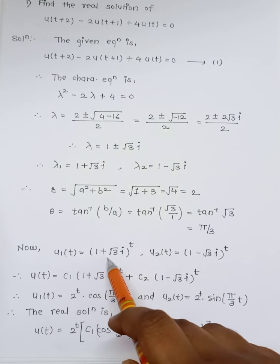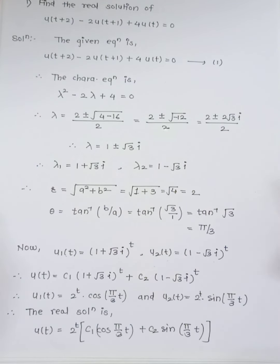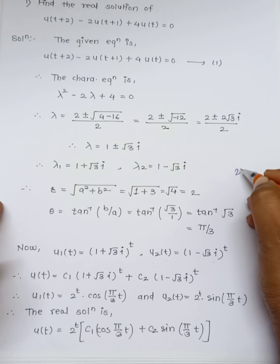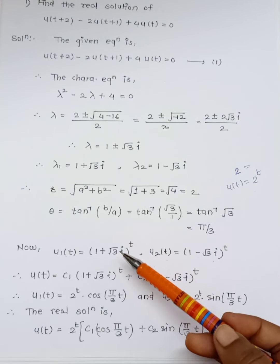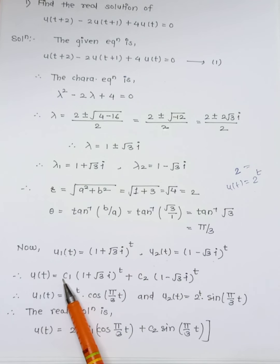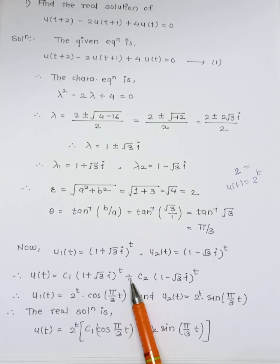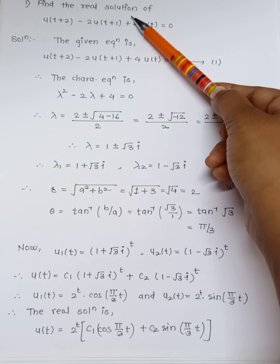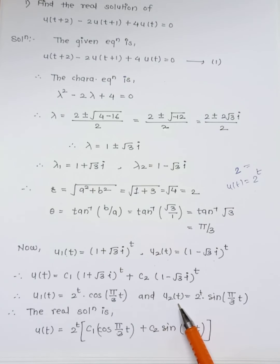Therefore u₁(t) = (1 + √3·i)^t and u₂(t) = (1 - √3·i)^t. To write the real solutions, we use the polar form: λ^t = r^t·(cos θt + i·sin θt). Taking r^t·cos θt and r^t·sin θt as the two real solutions, we get: u₁(t) = 2^t·cos(πt/3) and u₂(t) = 2^t·sin(πt/3). These are the two real solutions.